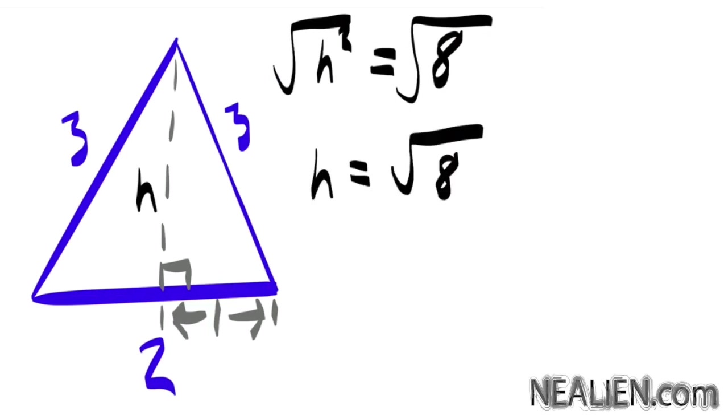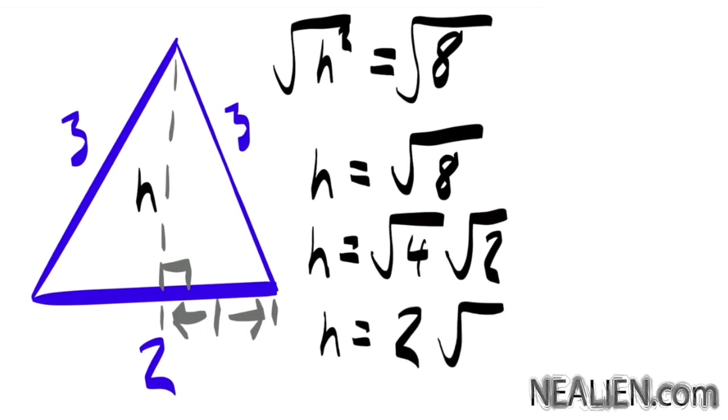You can factor the 8 as being a 4 times a 2. So the square root of 4 is 2 and you're left with the square root of 2. So h is equal to 2 times the square root of 2. Not a really clean number, but that's okay.